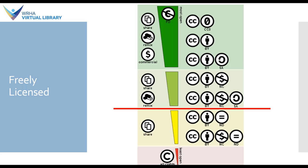Once we get below the red line, we're getting to material that is still being shared but is no longer really considered open because it doesn't allow for revising and remixing — that is the ND restriction, which refers to no derivatives. Something with this restriction means you can share it, it's free, you can use it, but you can't make any additions to it. And then at the bottom is what you might think of as traditional copyright — all rights reserved, you can't do anything with it.